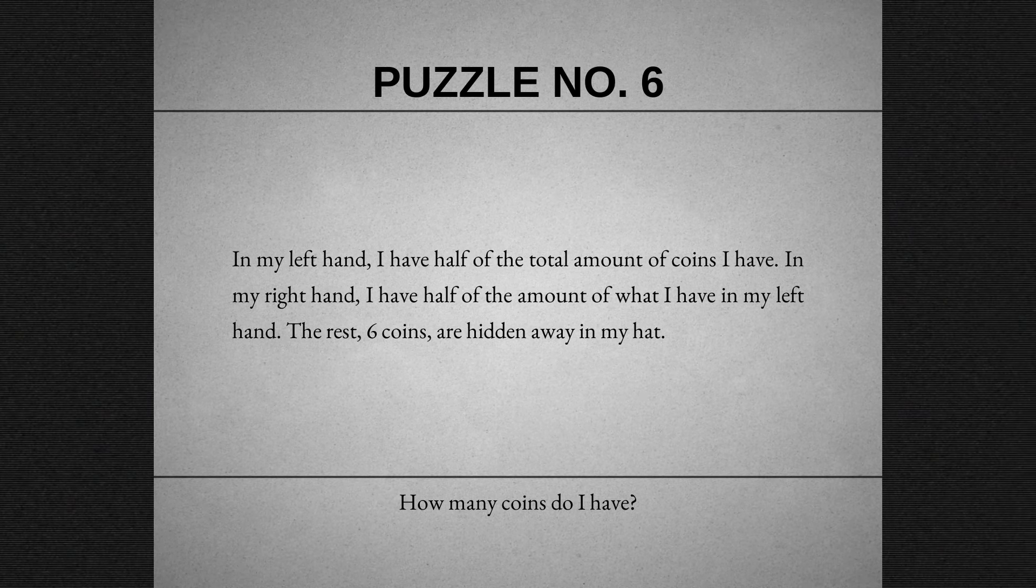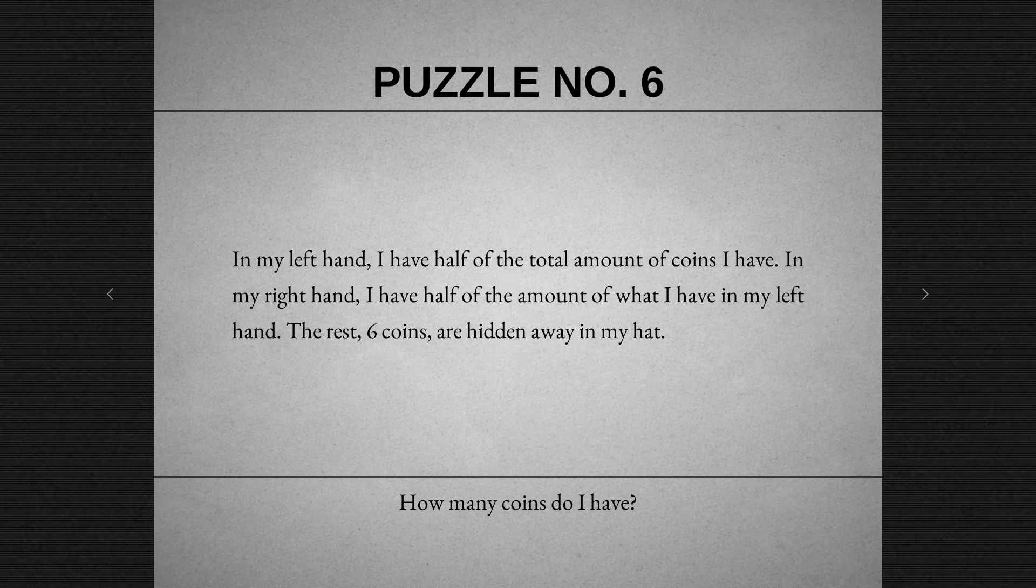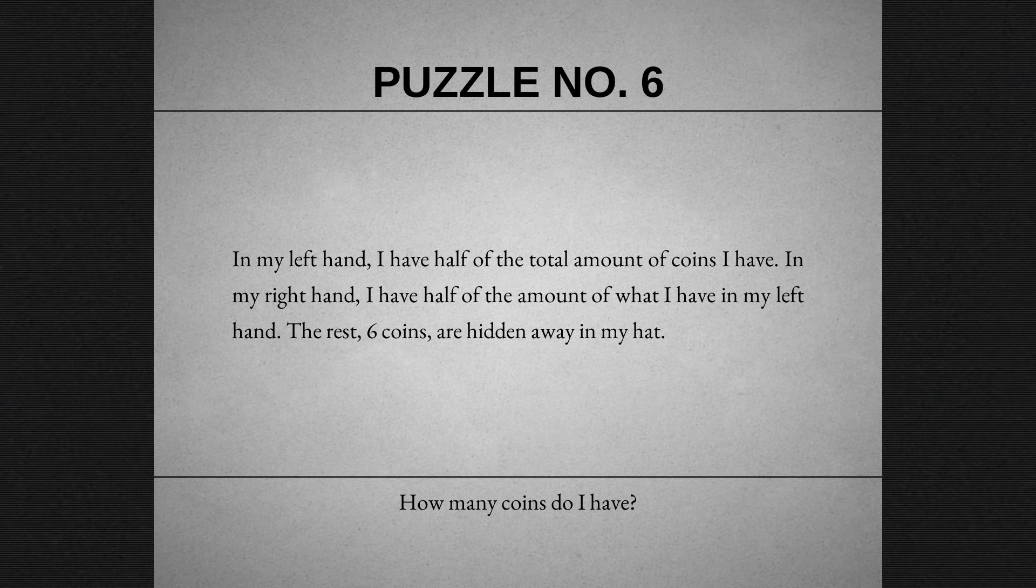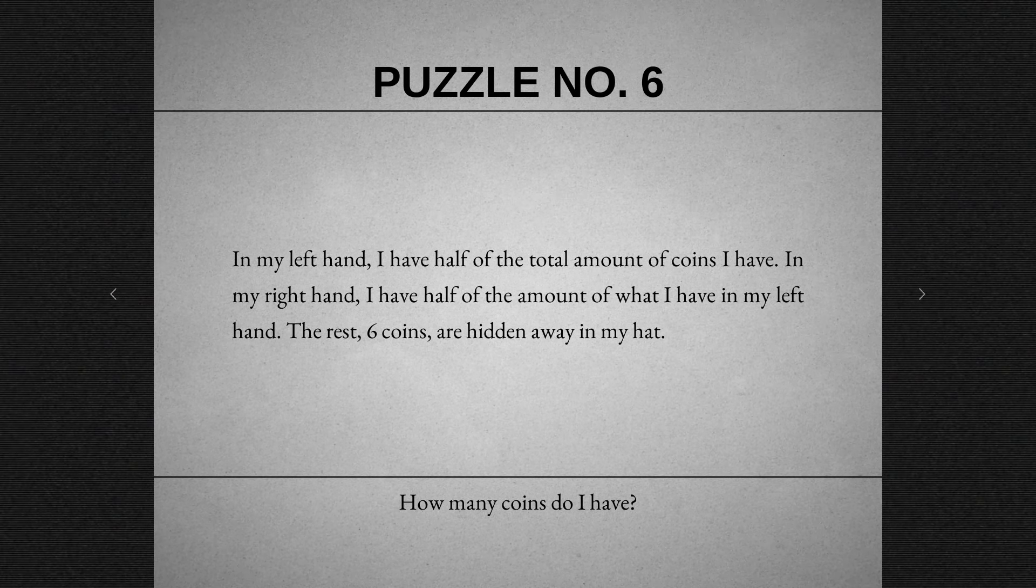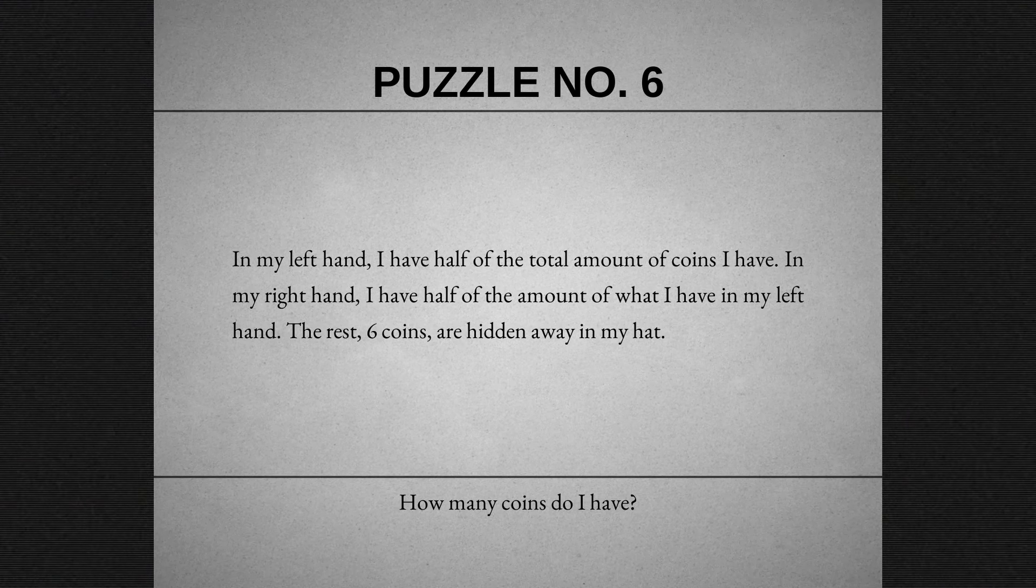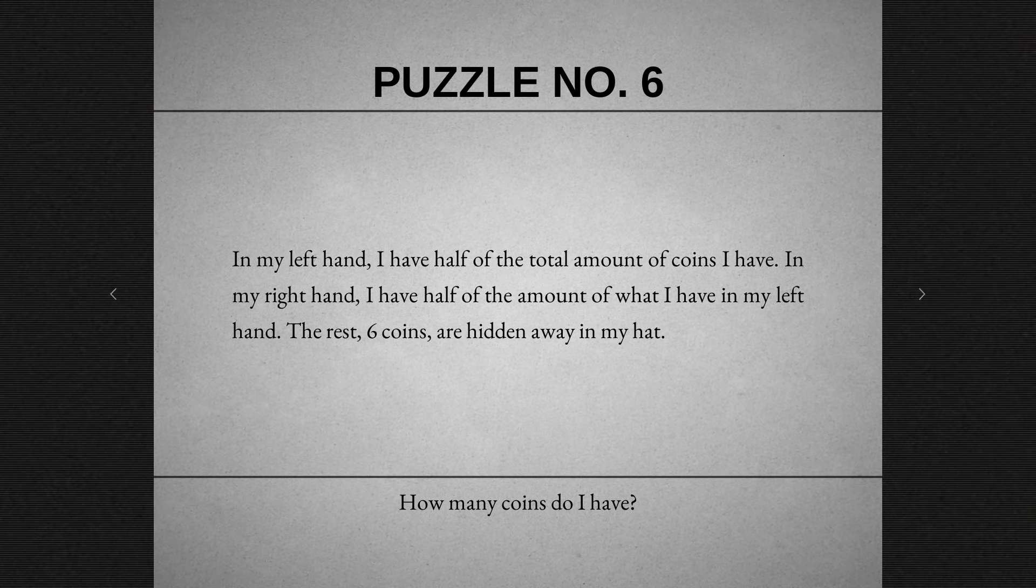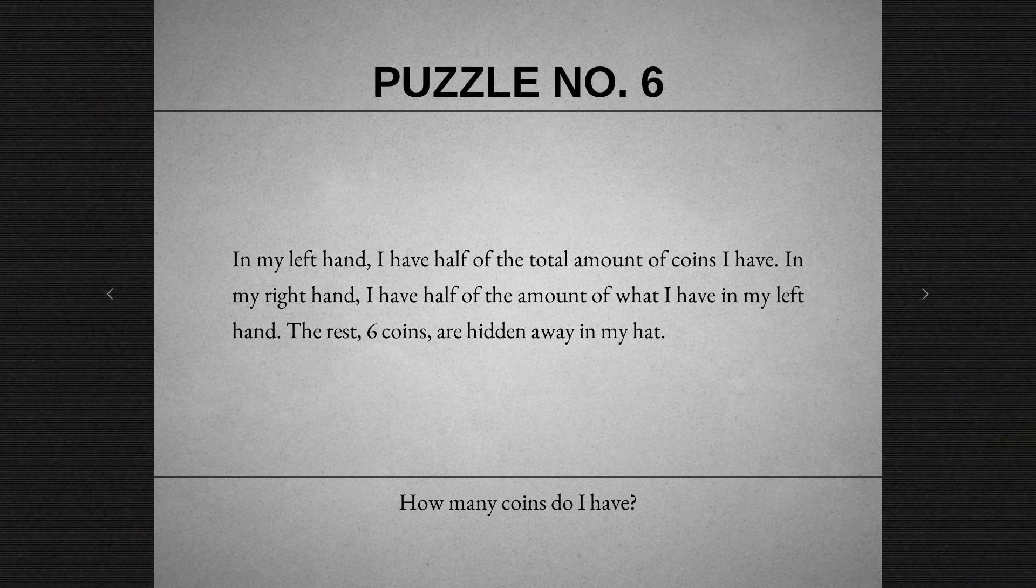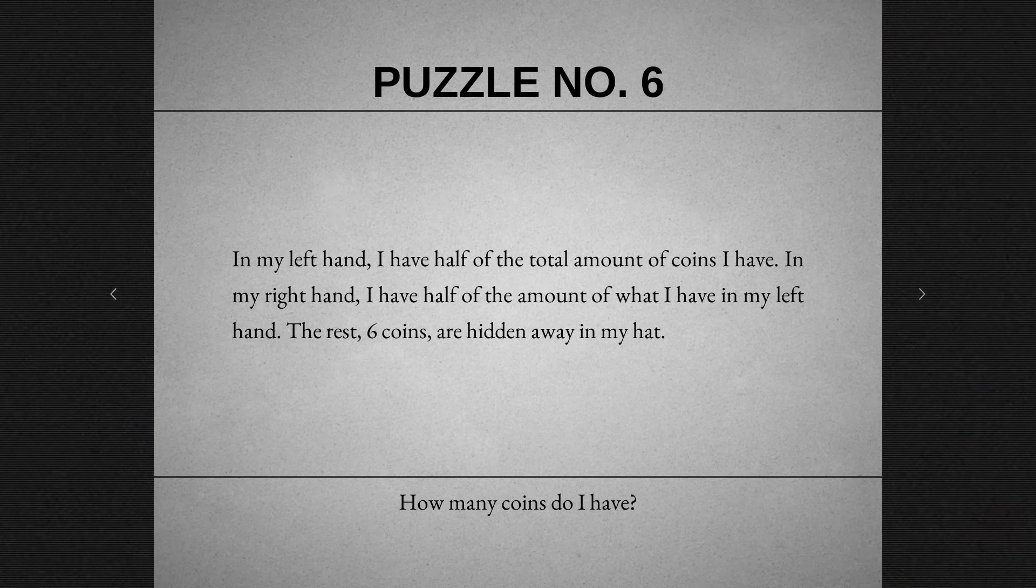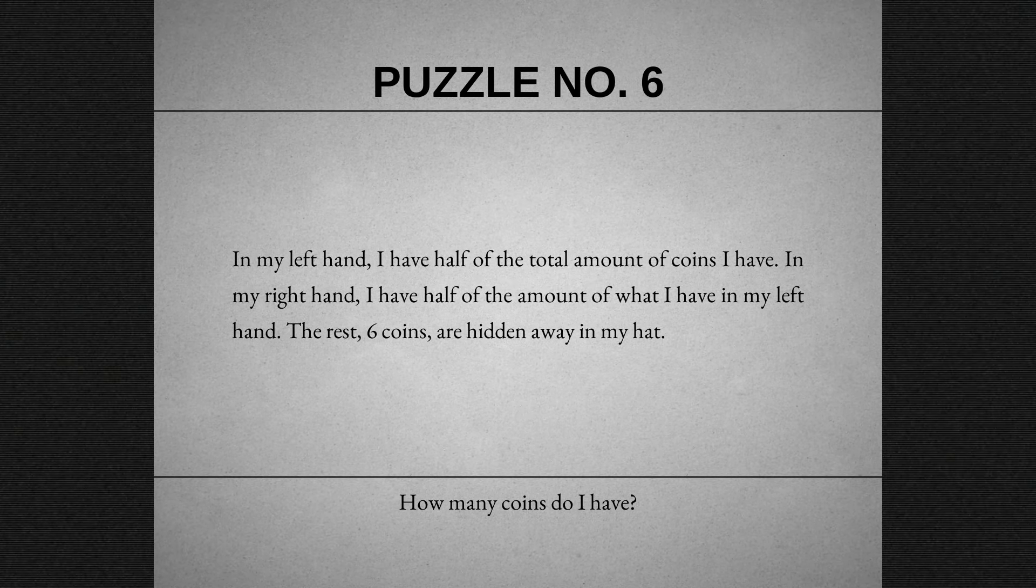In my left hand, I have half of the total amount of coins I have. Total amount of coins, as in the number of coins, or the total value of the coins? That sounds ambiguous. In my right hand, I have half of the amount of what I have in my left hand. The rest, six coins, are hidden away in my hat. So there's no value, it's just number of coins. So then six is a quarter, so 24.